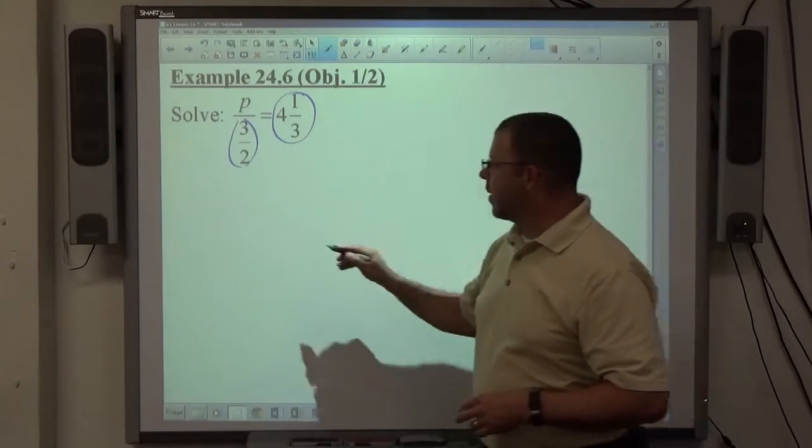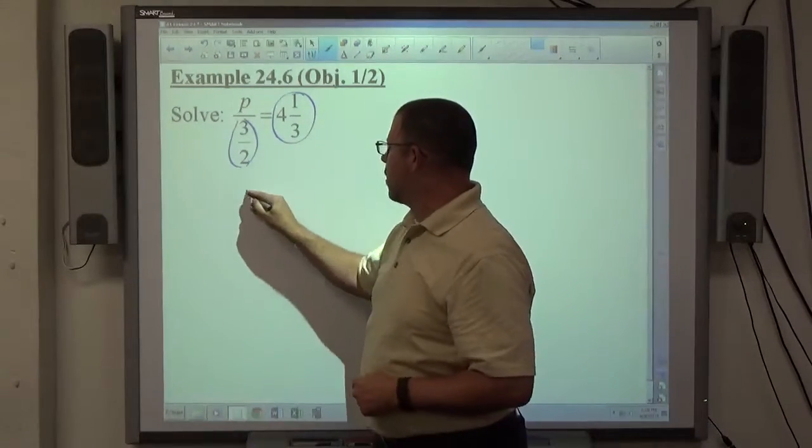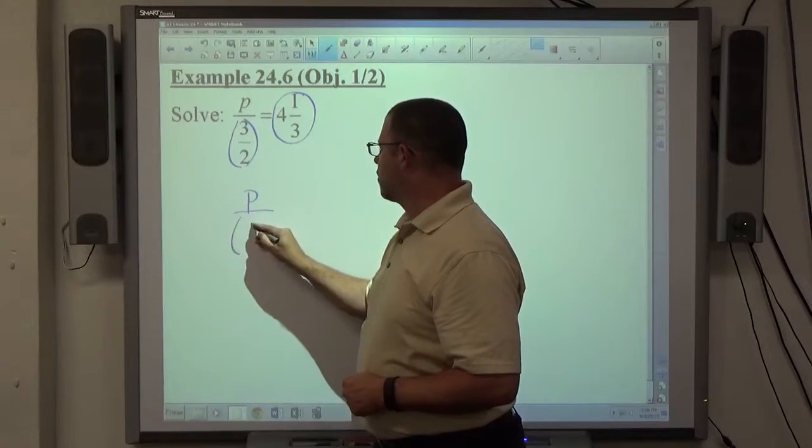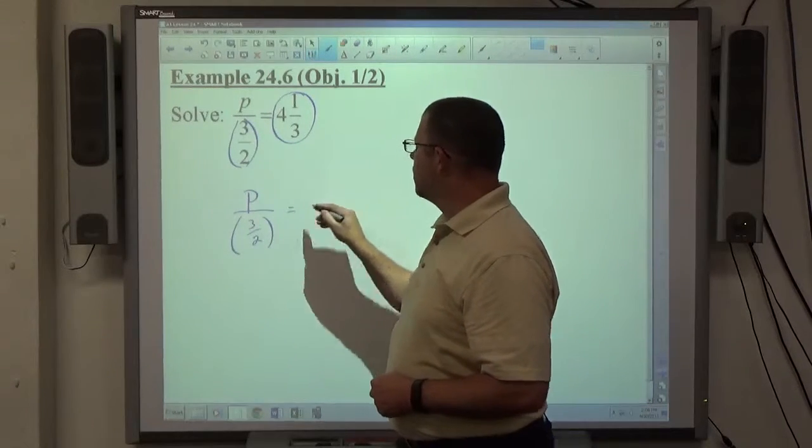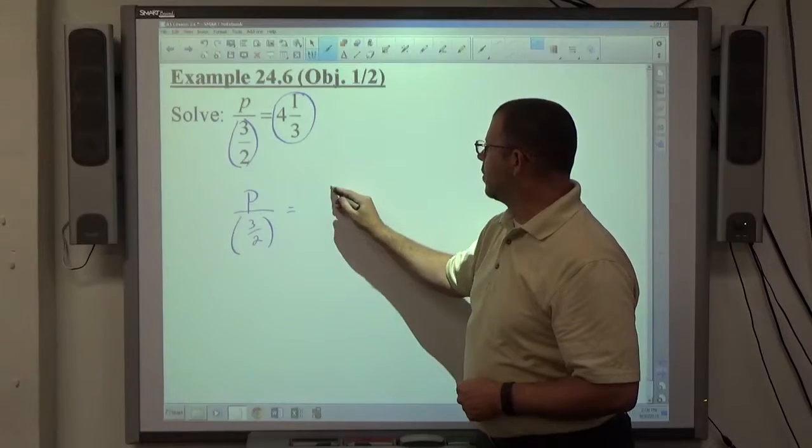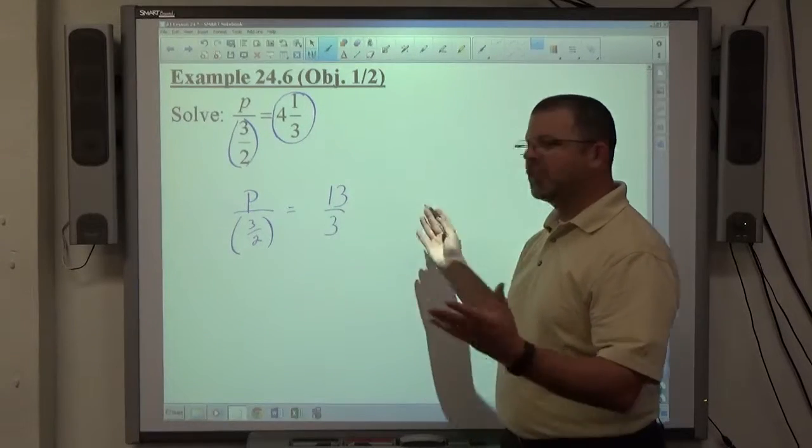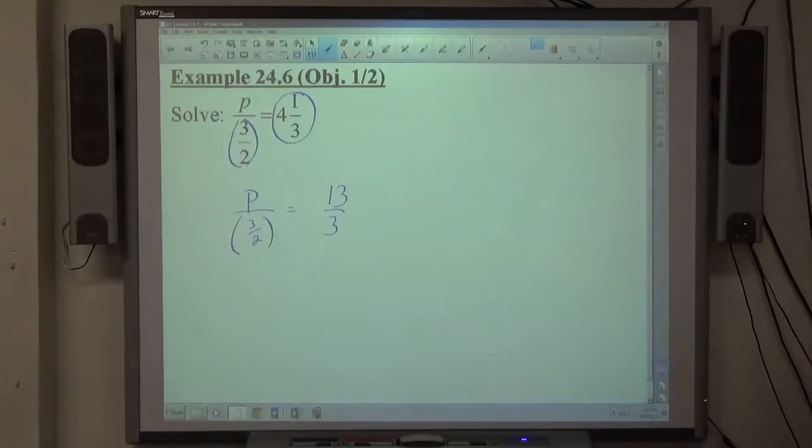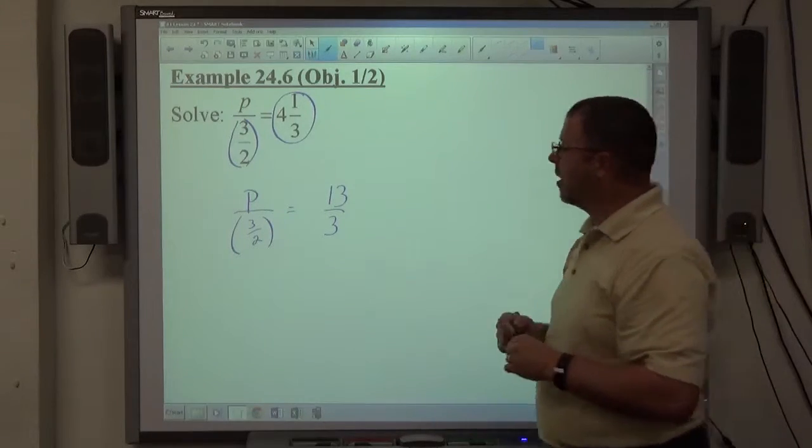So what I would do first is I would rewrite the problem. If that's in my book, what would go on my paper is p over 3 halves equals, and then 4 and 1 third is equal to 13 over 3. So the first thing I would do initially before I do anything else is rewrite it so it's an improper fraction. And again, I would probably put parentheses around that bottom just to really reinforce that that's the entire denominator.